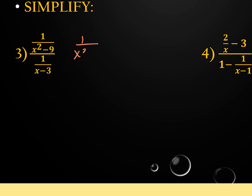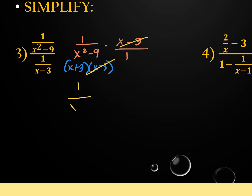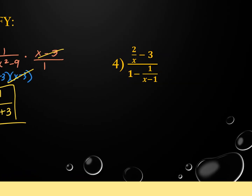For example three, if I keep-change-flip, I factor the denominator into (x+3)(x-3). The (x-3)'s cancel and I get 1 over (x+3). Make sure that x+3 stays in the denominator — it's on the bottom. Now it gets a little uglier with two terms in the top and two terms in the bottom.